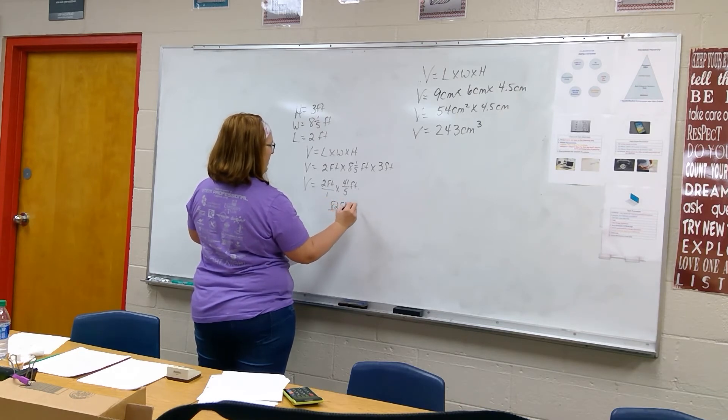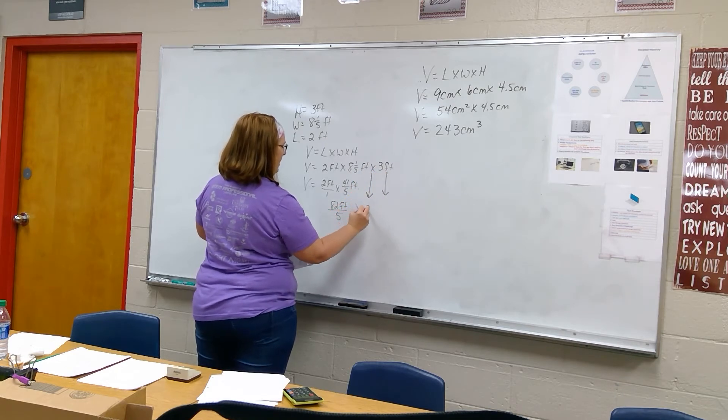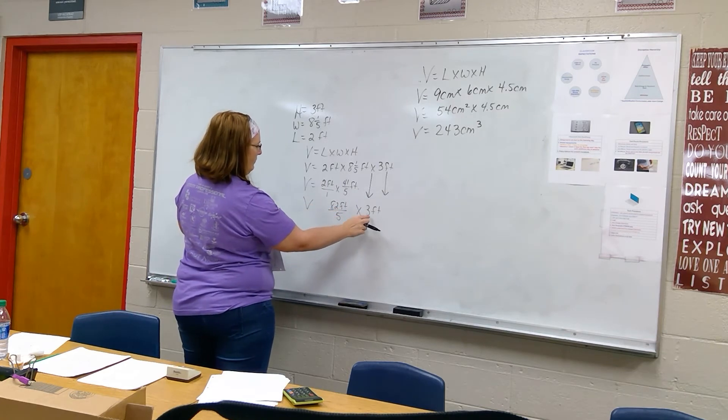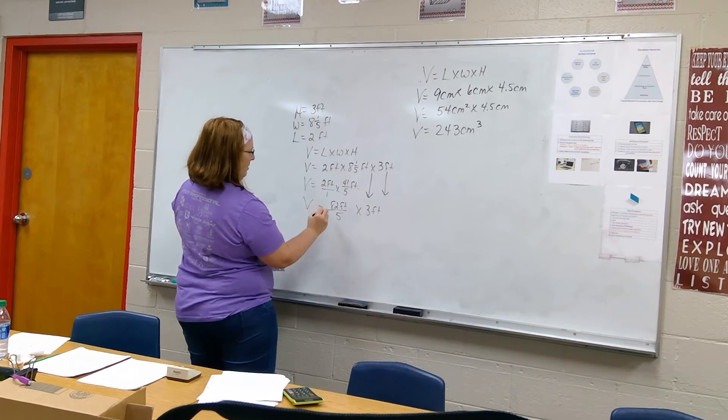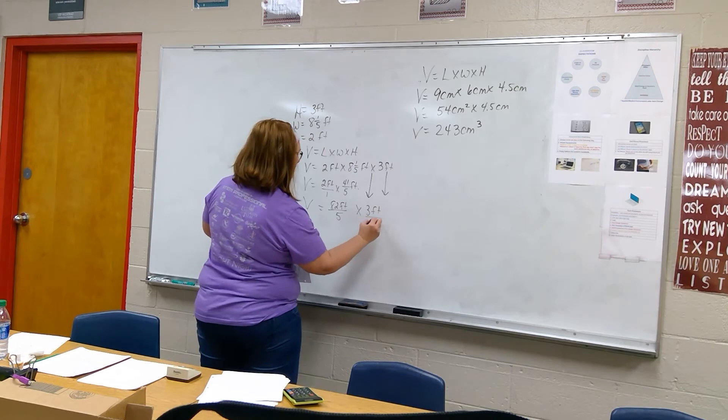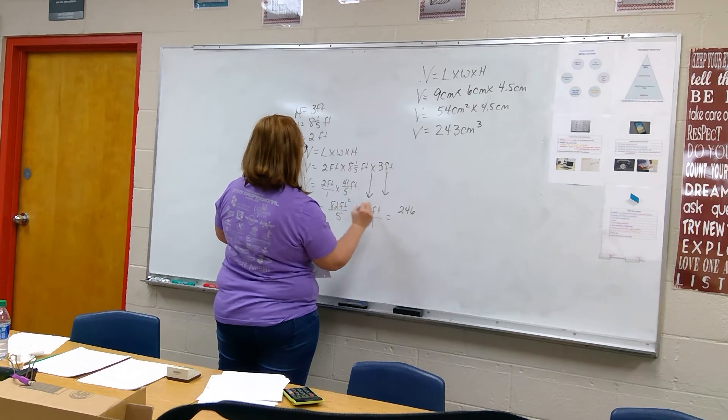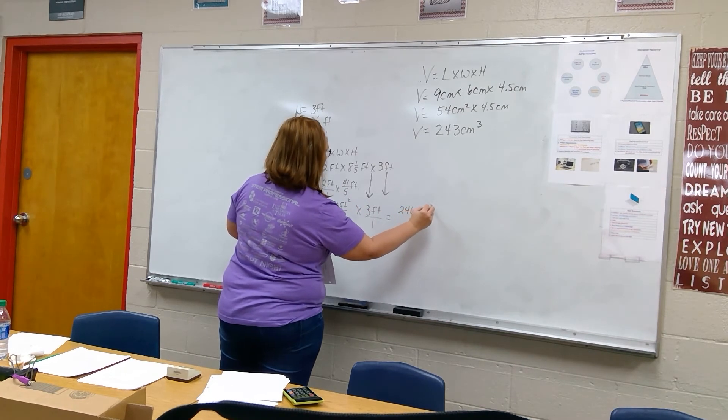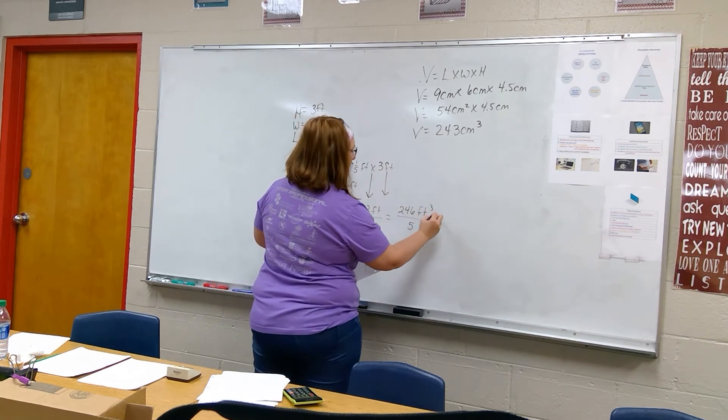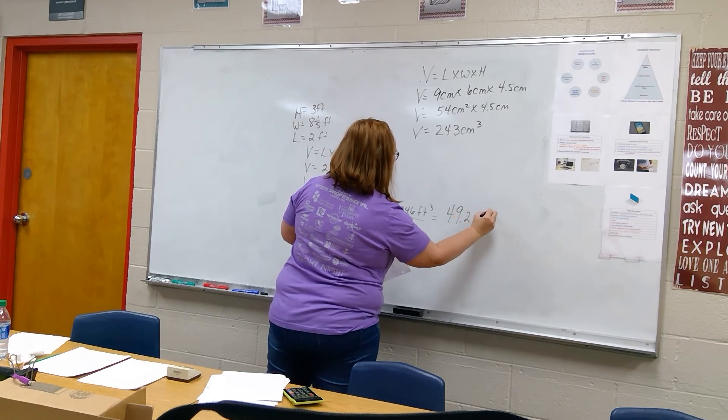Over five, bring this down, now bring this down, now bring this down times three feet. So 82 over five feet, 82 times three equals 246 foot, that should be squared, feet cubed divided by five. 246 divided by five equals 49.2 feet cubed.